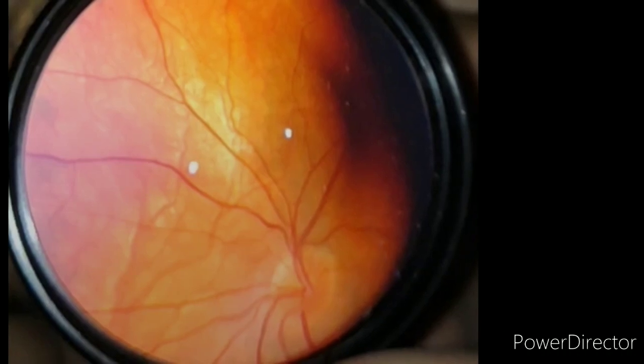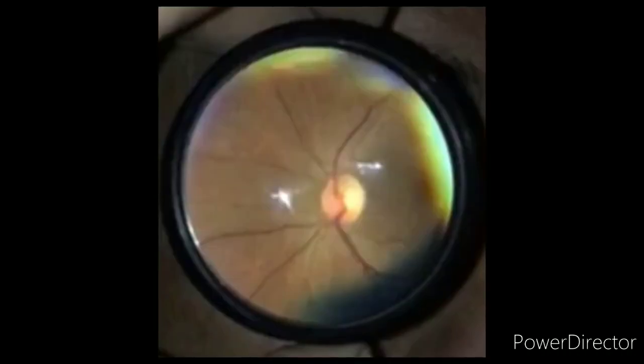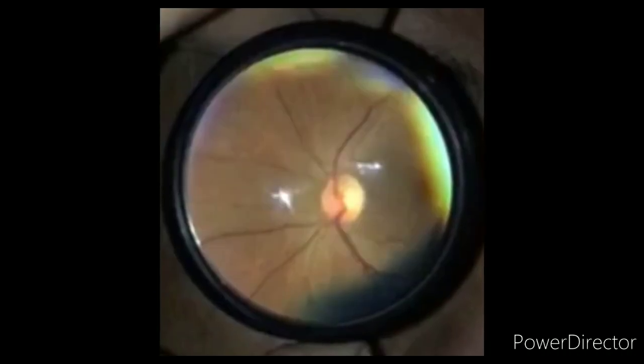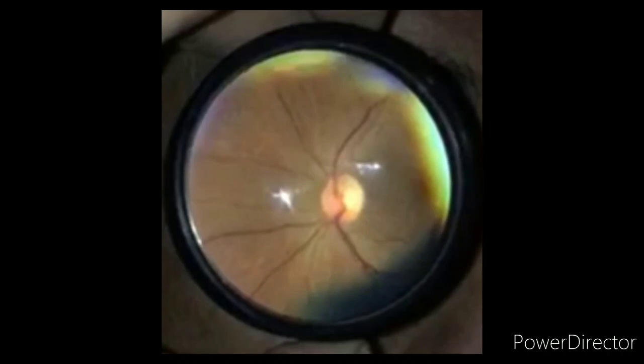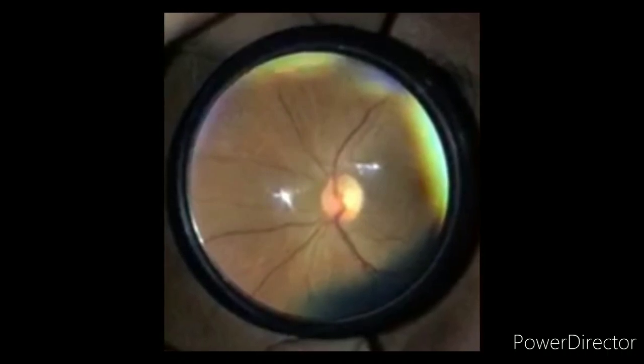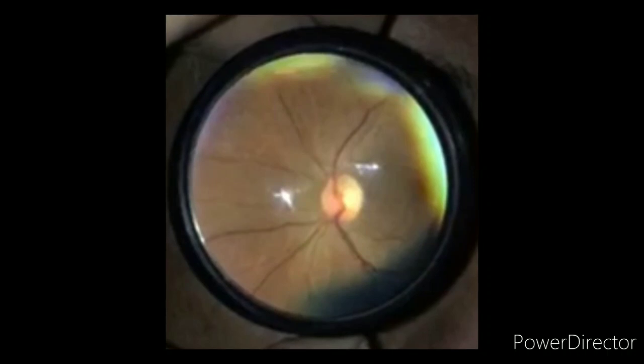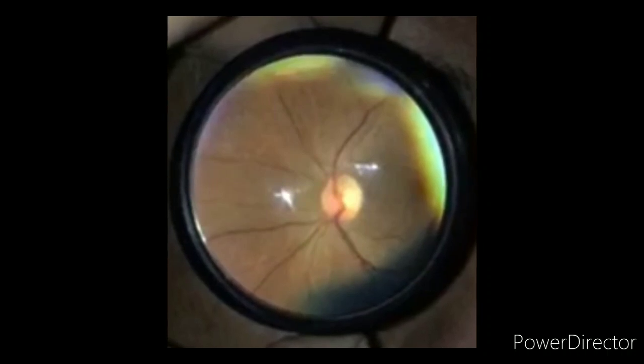Now in the second patient, you can see three of the ten area of the disc that is cupped. So it is a normal cup-disc ratio which is 0.3 cup-disc.